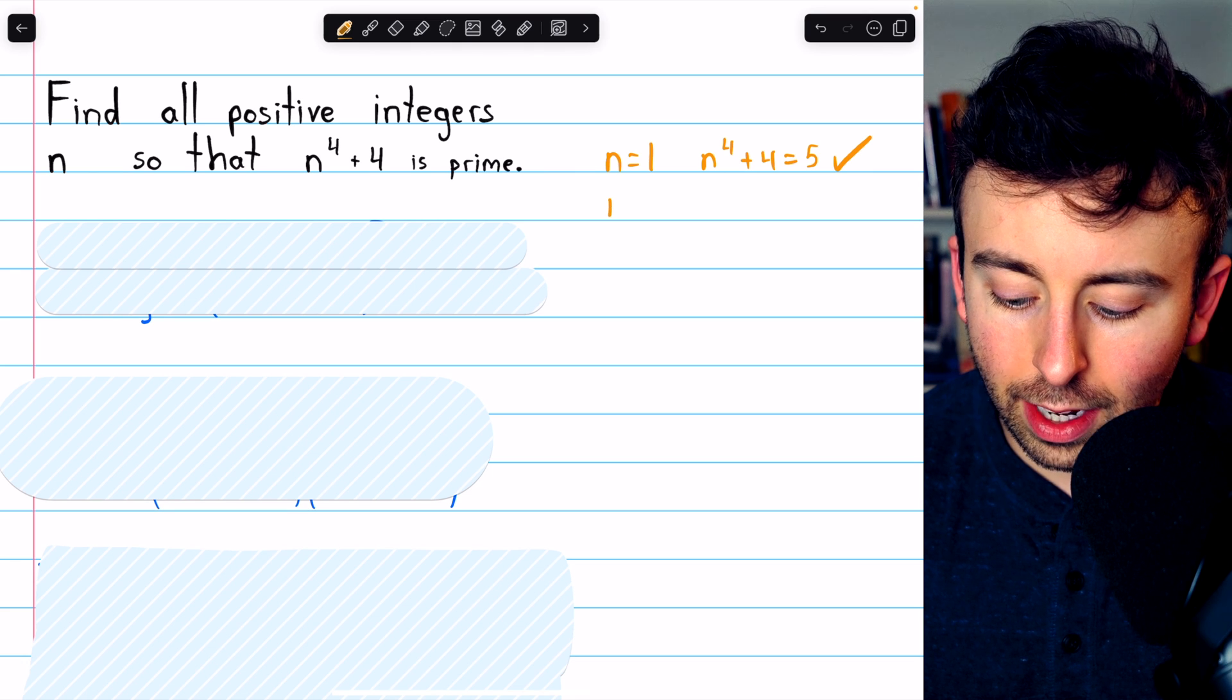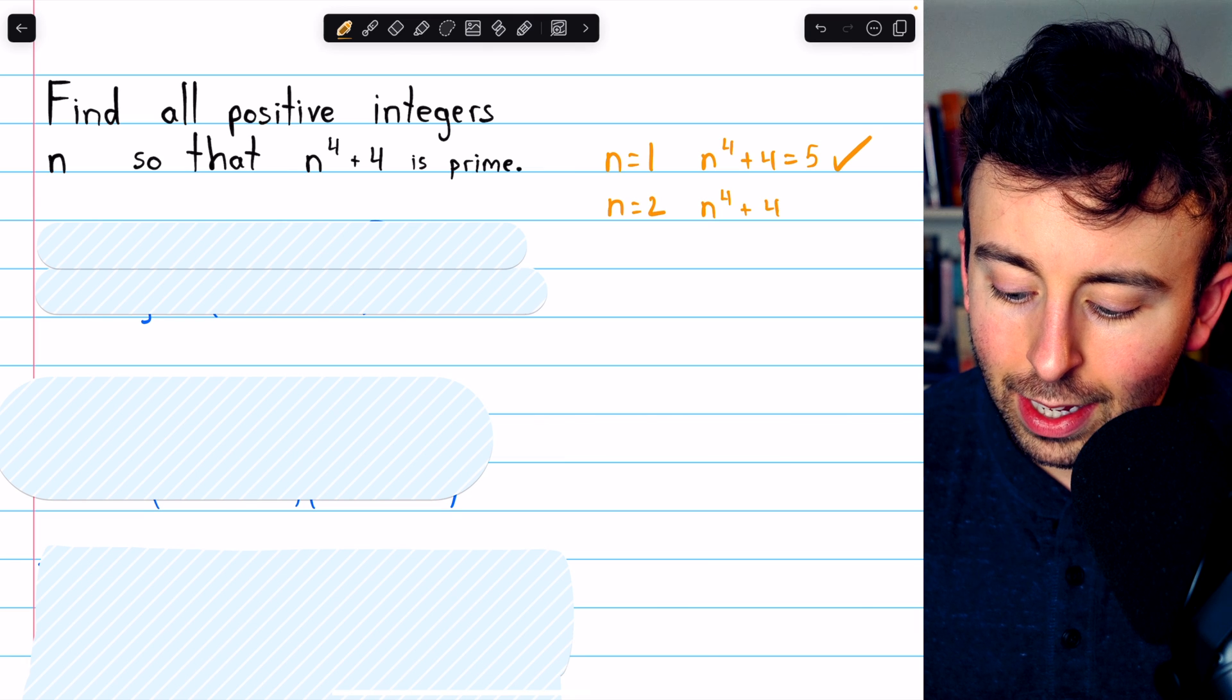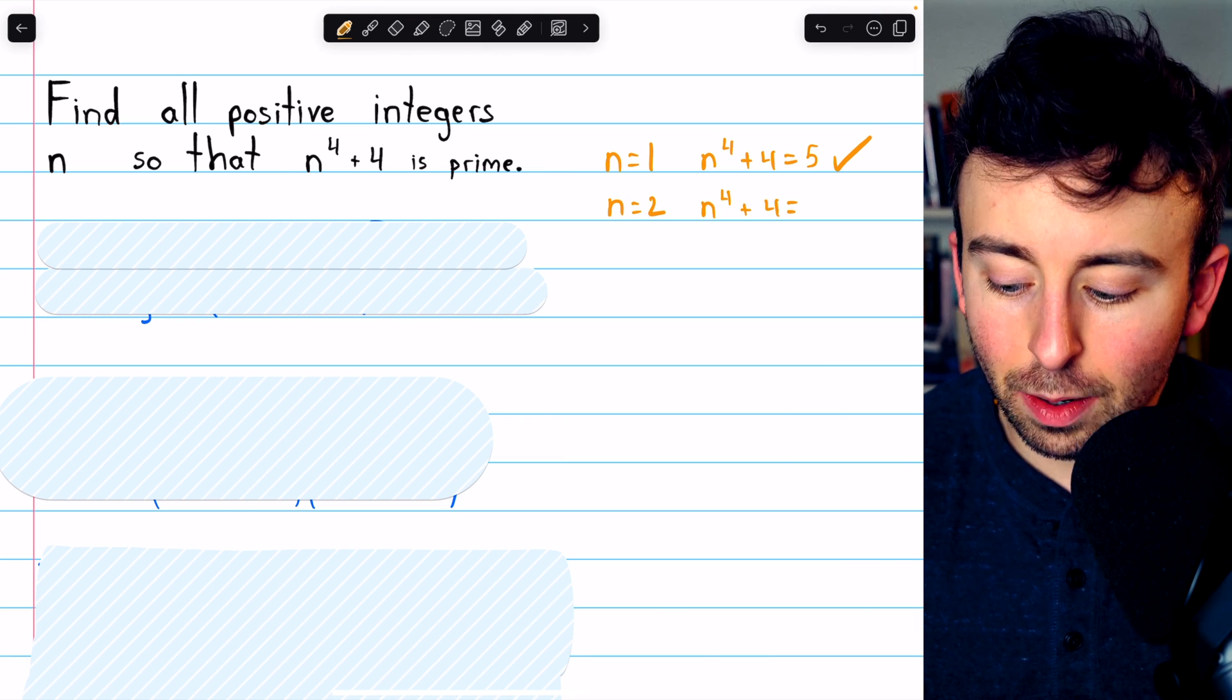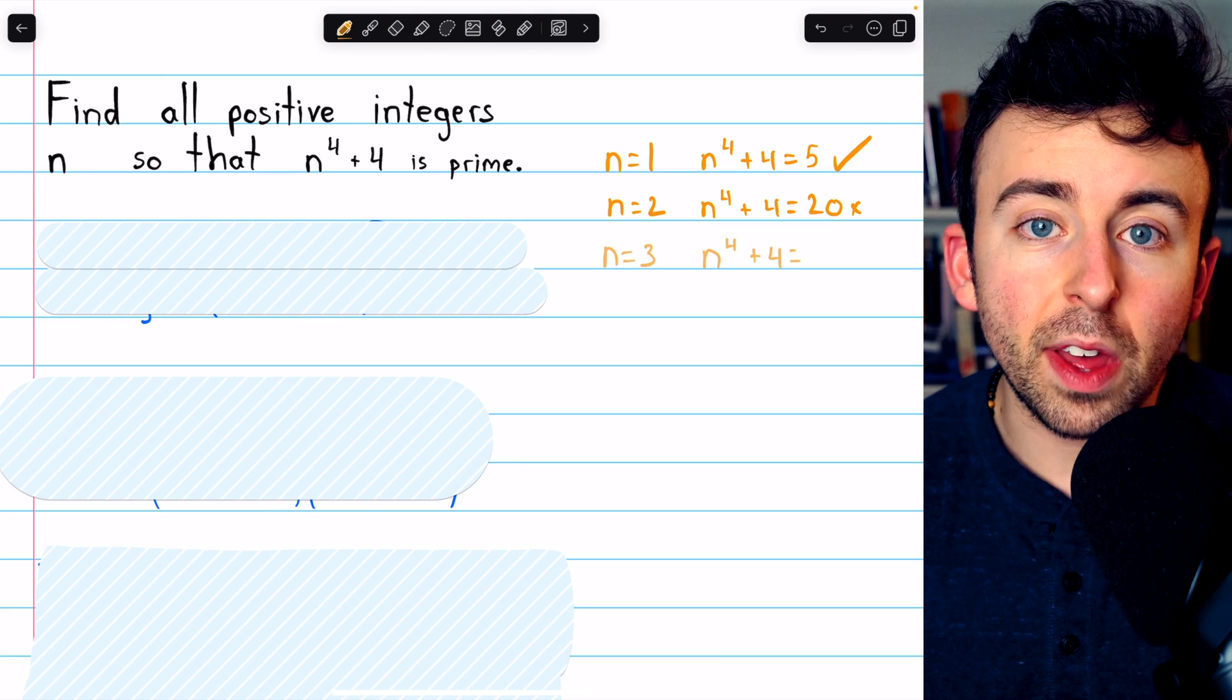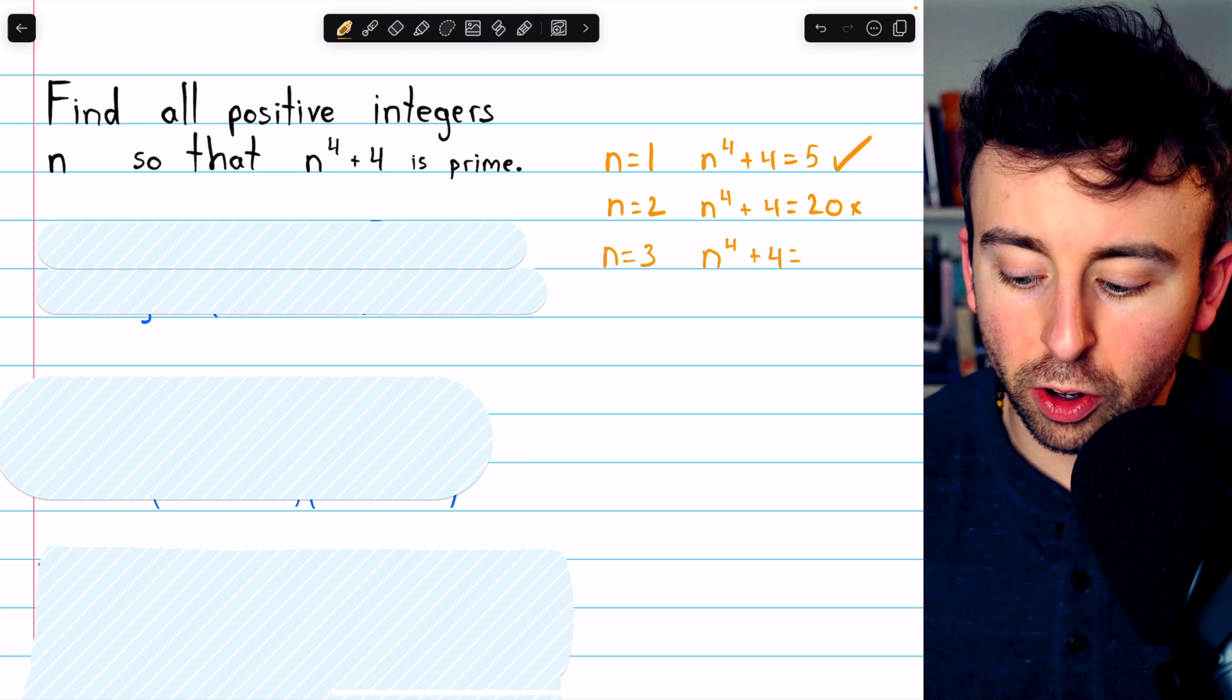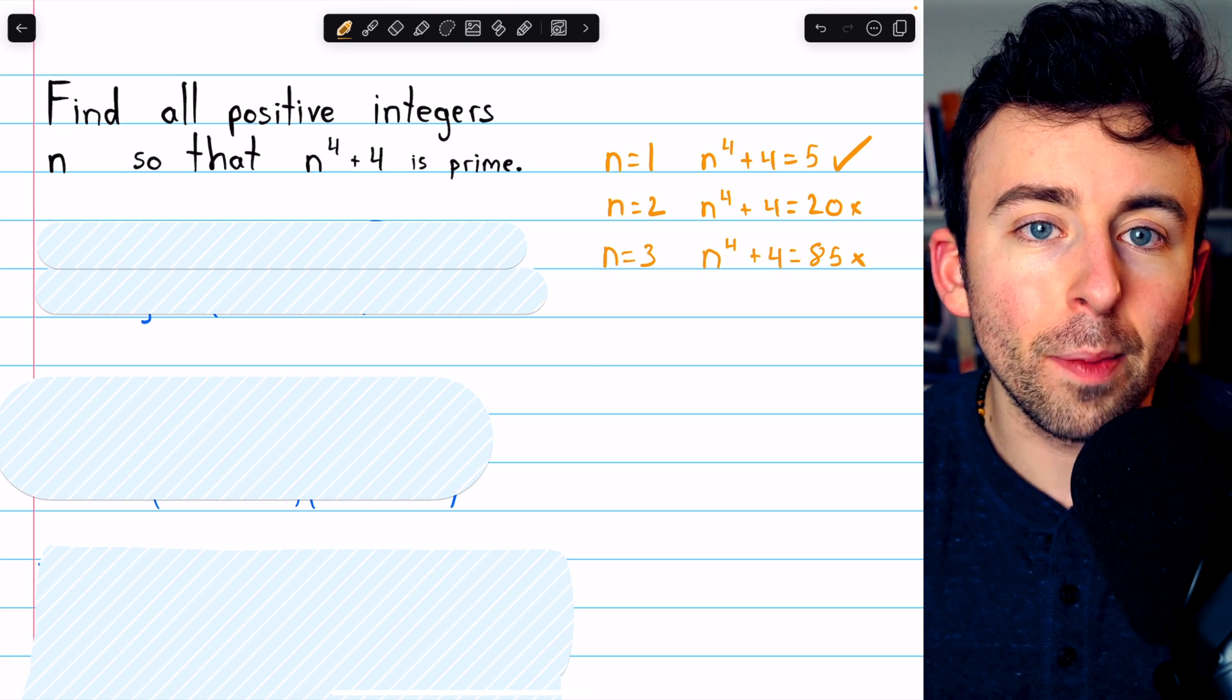On the other hand, if n equals 2, then n to the 4 plus 4 is equal to 16 plus 4, which is 20, which is not prime. If n equals 3, then this expression is equal to 81 plus 4, which is 85, which is also not prime.